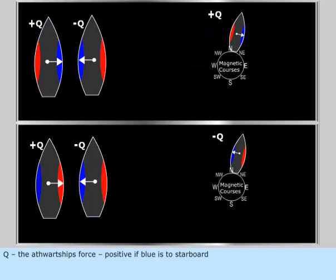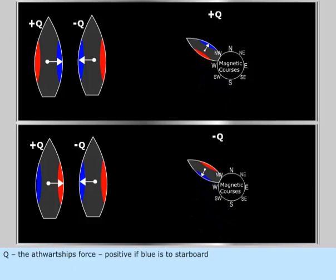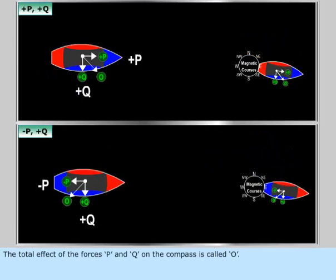Q, the athwartship force, is positive if blue is to starboard. The total effect of the forces P and Q on the compass is called O.